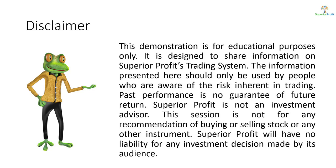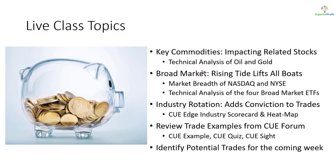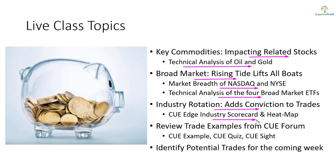In today's analysis we look at oil and gold using technical charts, as they tend to impact related stocks. When swing trading stocks, we like to align them with the market's direction — we'll study that using NASDAQ and NYSE market breadth and technical analysis of market ETFs. We also align trades with industry strength, using a scorecard and heatmap. We may look at recent trade ideas from our traders forum, and we will look for potential trades for the coming week.